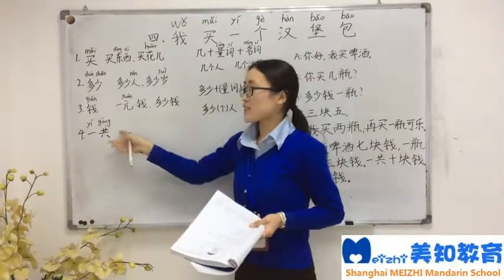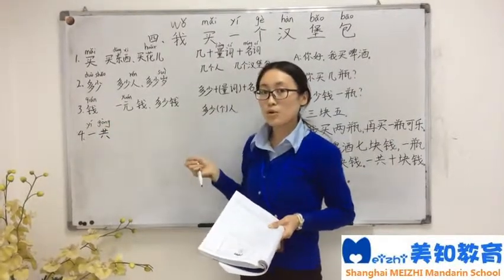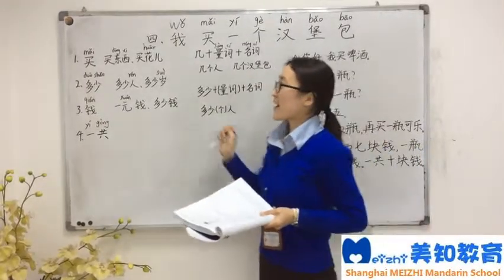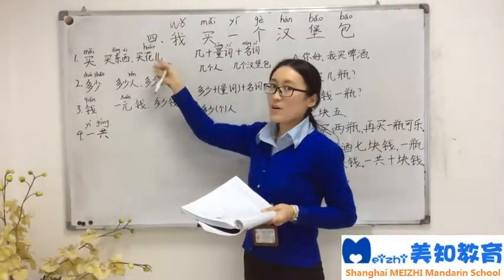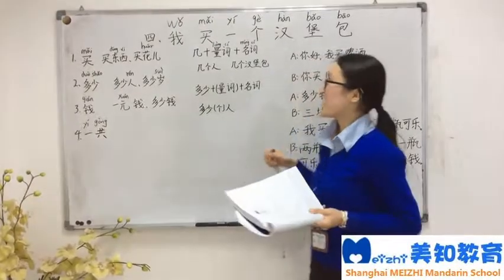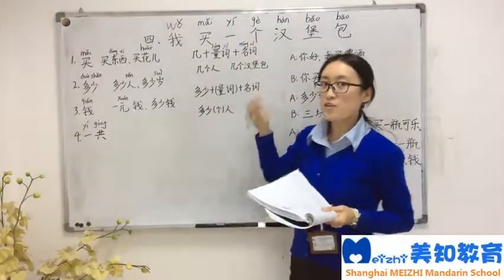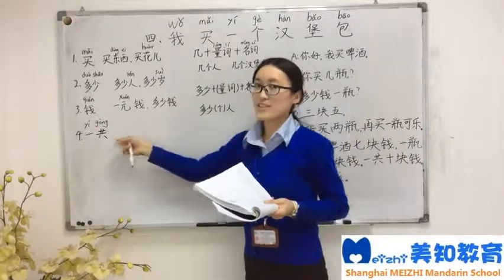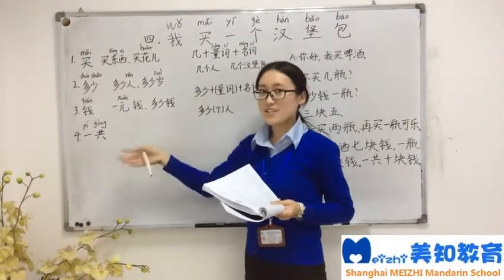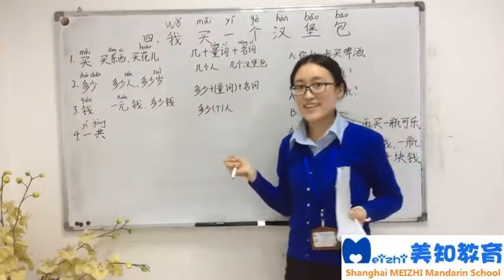Last one: 一共. 一共 means 'total'. For example, you buy a flower for 十块钱, and 一个汉堡包 for 十块钱, so 一共二十块钱. Also, 这儿一共多少人 means 'how many people are here in total'.